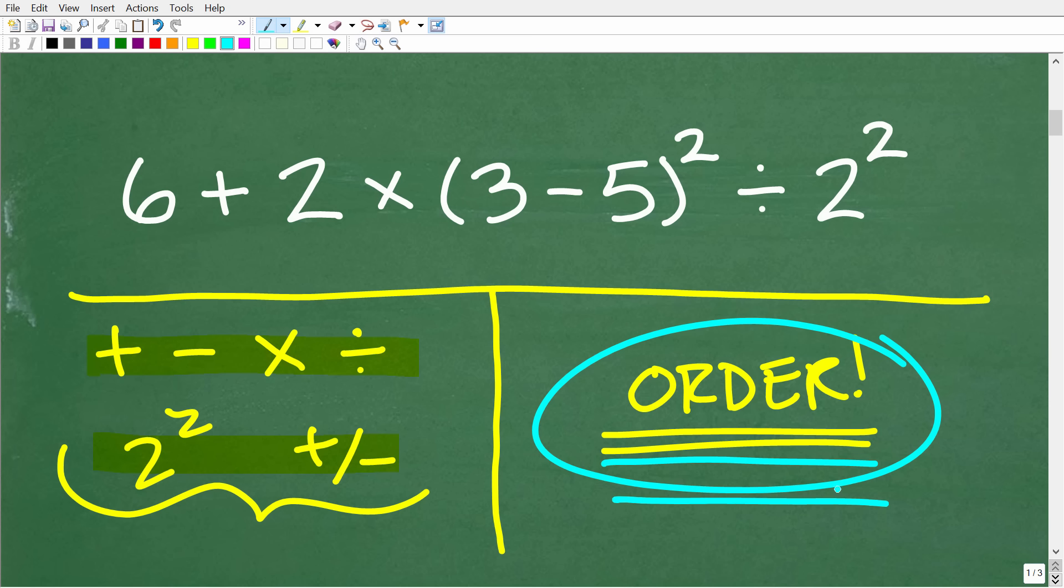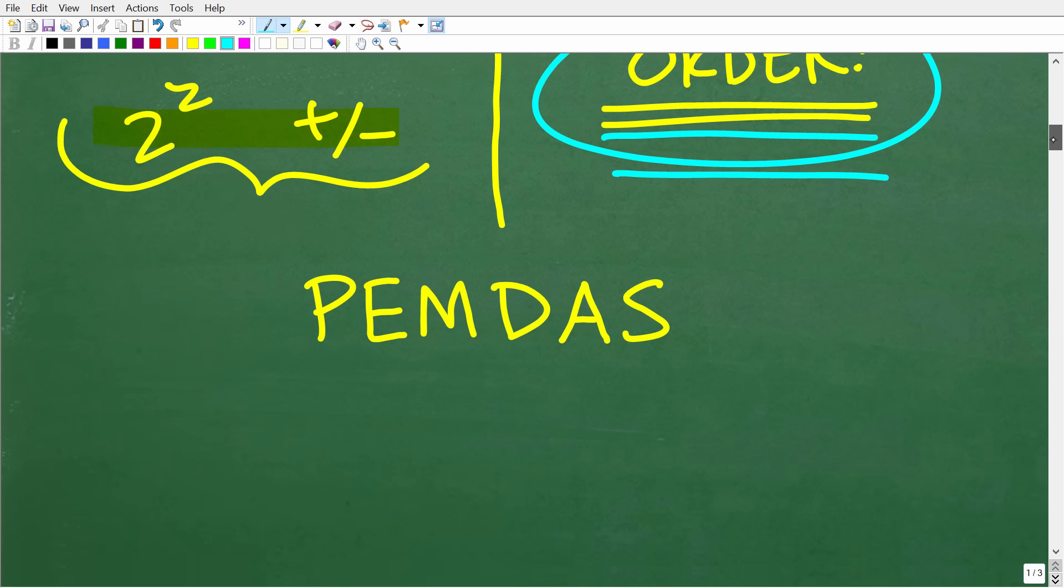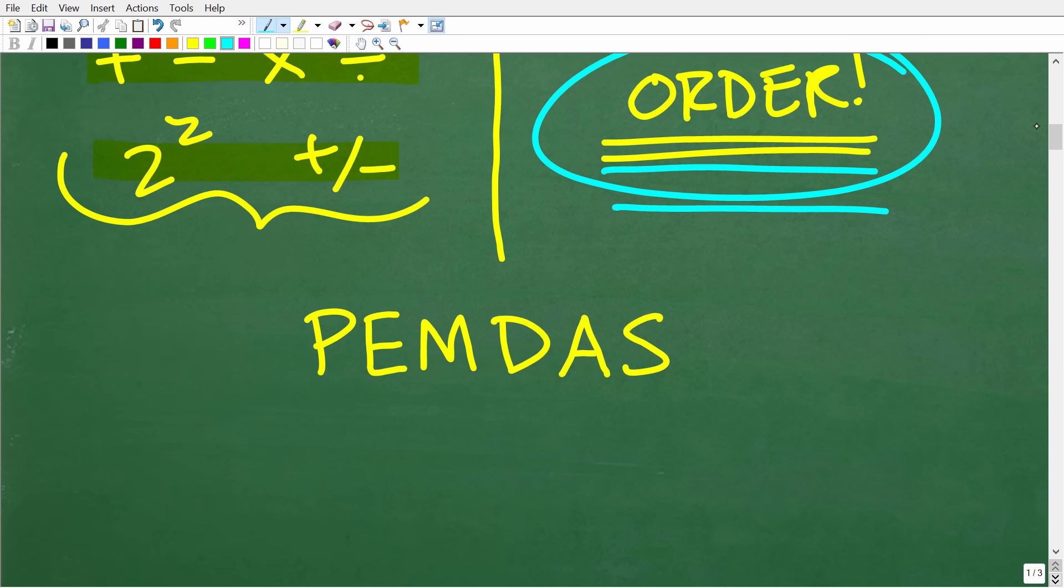But how do we kind of know the correct order to do this problem? Well, in mathematics, we have something called the order of operations. And there is a lovely acronym that we can use to help us kind of walk through the steps. So we are taking the correct order of operations. And that is called PEMDAS.